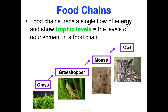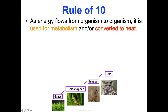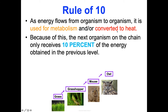Food chains also show something called trophic levels — the levels of nourishment in a food chain. Now I have to mention the rule of 10. As energy flows from one organism to another — grass to grasshopper, to the mouse that eats the grasshopper, to the owl that eats the mouse — a lot of energy is used for metabolism and a lot gets converted to heat, because it's not a perfectly efficient process. Because of this, the next organism on the chain only gets 10% of the energy from the previous level. This is called the rule of 10.